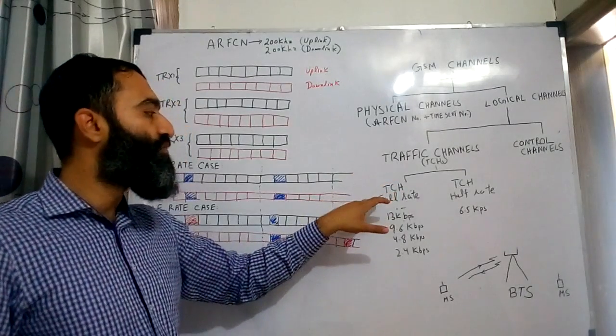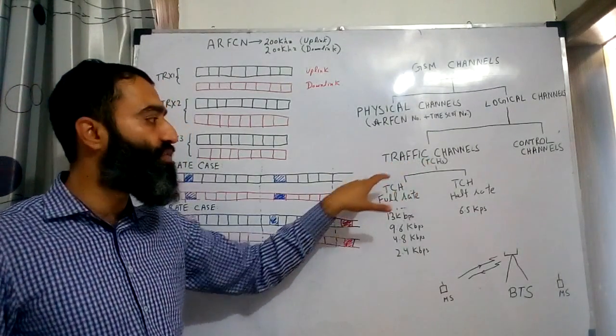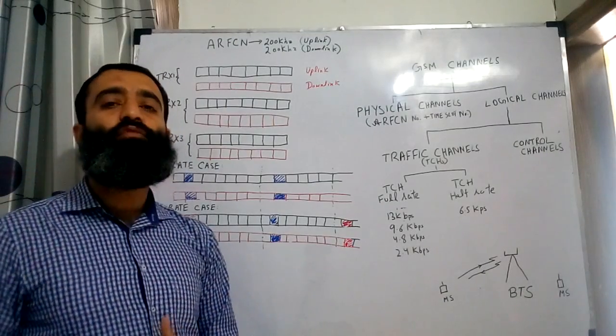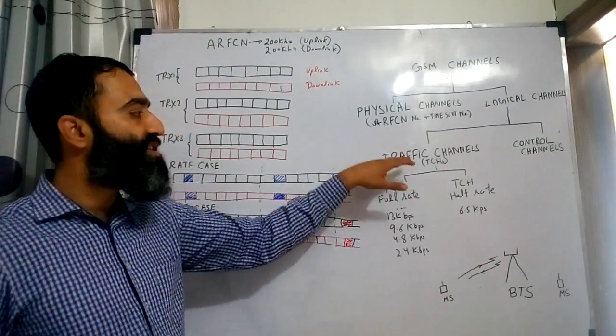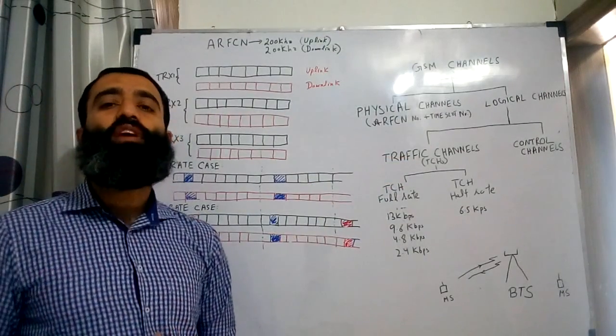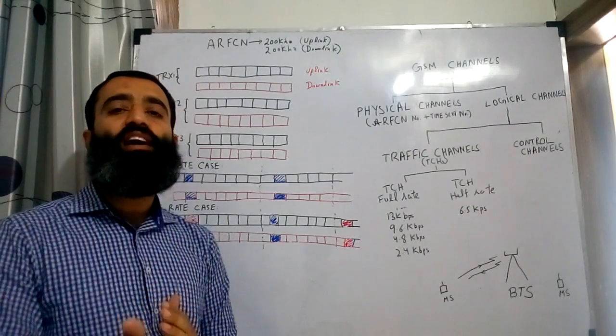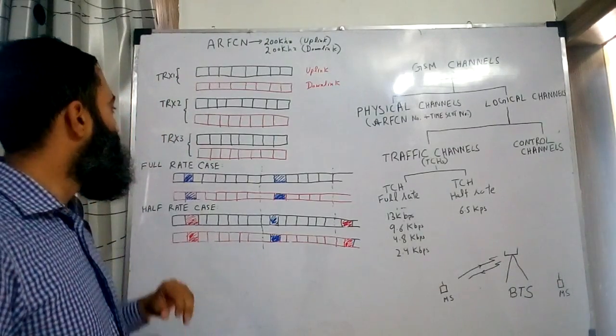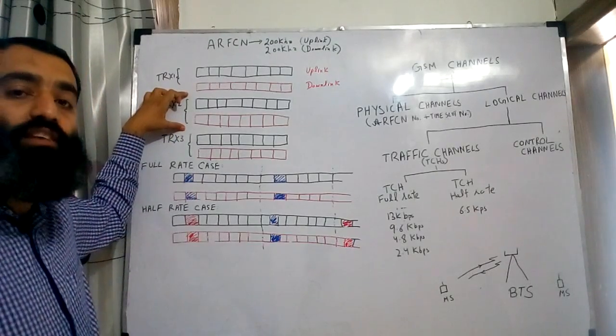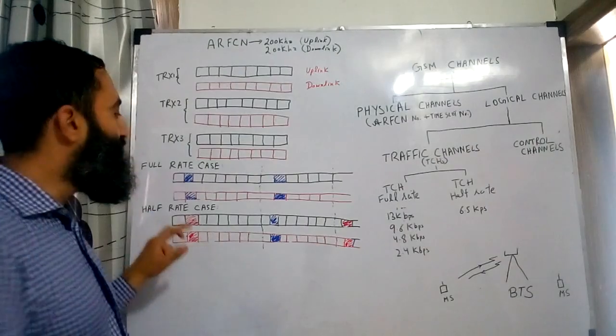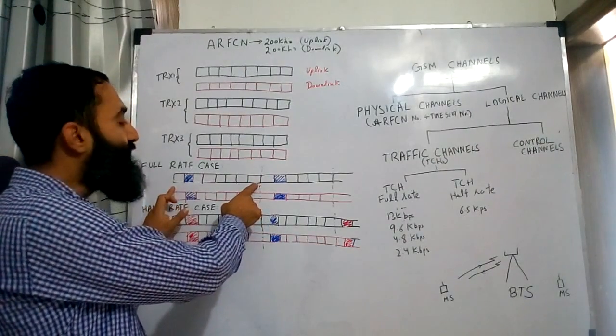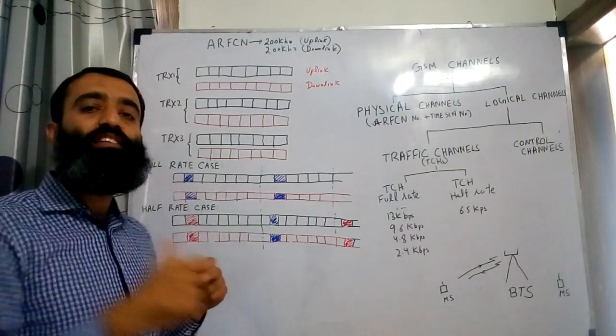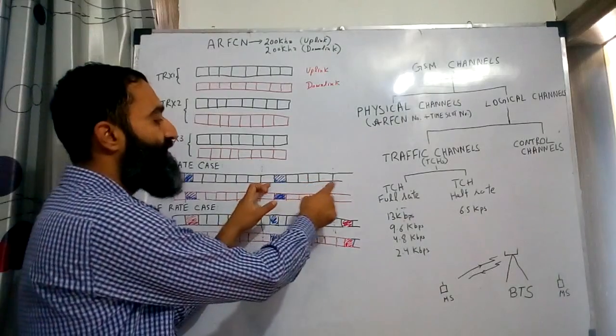In the traffic channels, you have full rate channels—TCH full rate channels—and TCH half rate channels. Now what is meant by the full rate and half rate TCH channels? Basically, TCH channels are used to either carry voice or to carry the internet data. First take the example of full rate. For example, we take the frequencies of TRX number 2, and as we said earlier, we have the frames of 8 time slots each in the uplink frequency and the downlink frequencies, and these 8 frame time slots are then repeated.